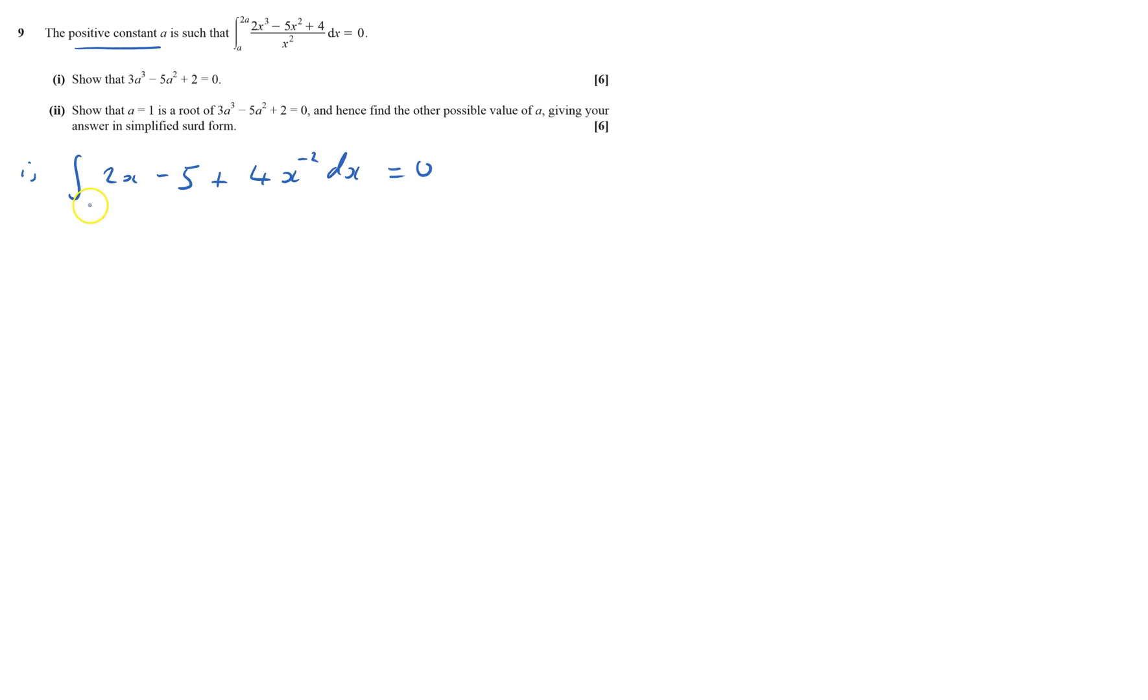And that's between a and 2a equals zero. Now I can actually integrate it. 2x, that's obviously x squared, minus 5x, and then it's going to be x integrating, so power increases, so that'll be minus 1, and I've got to get plus 4, so that's going to be minus 4, and that's between 2a and a, that equals zero.